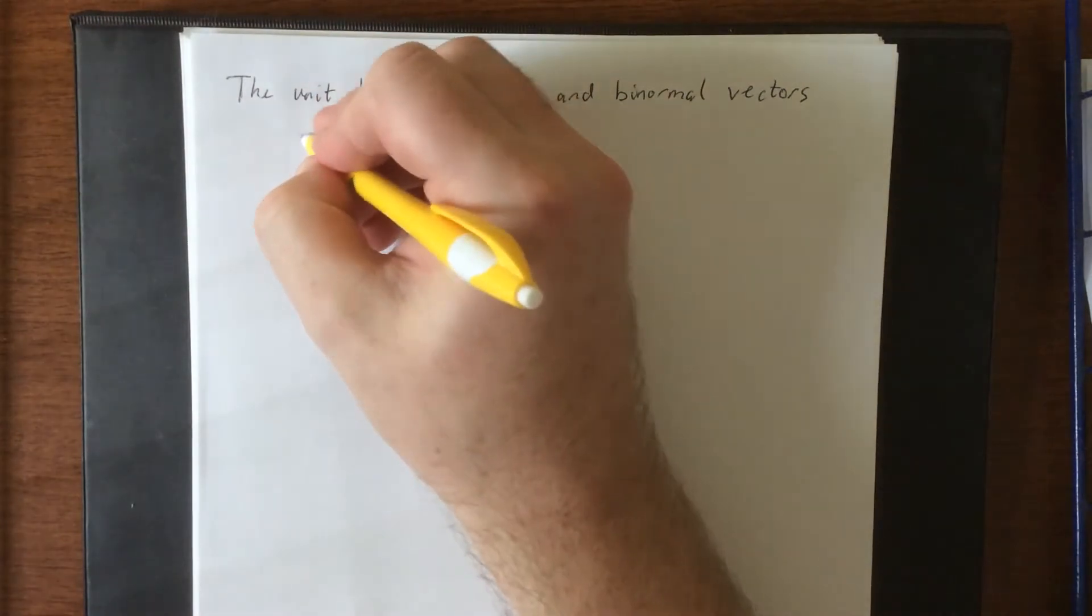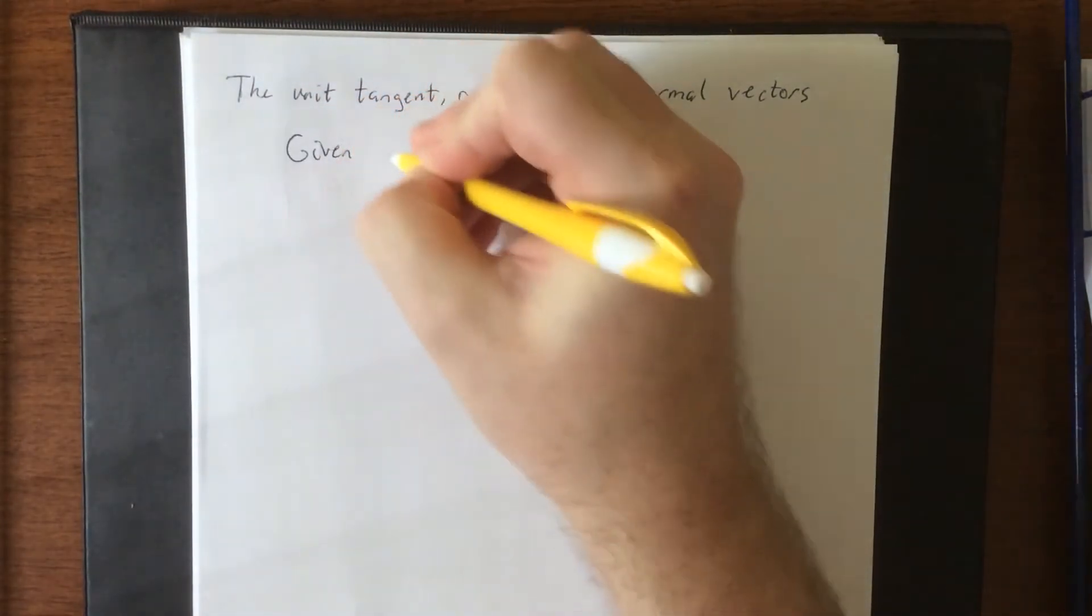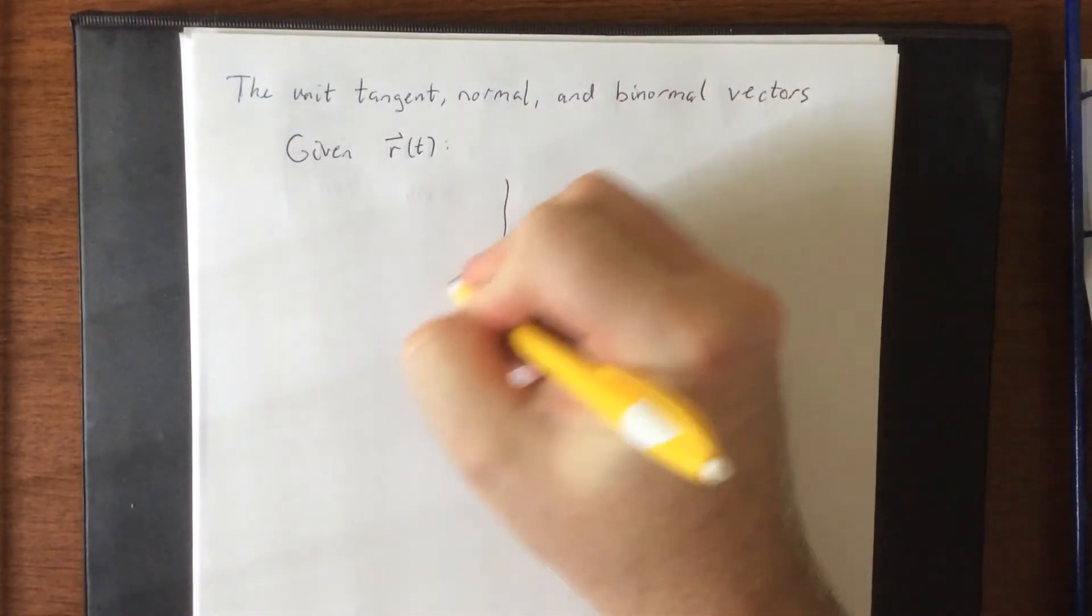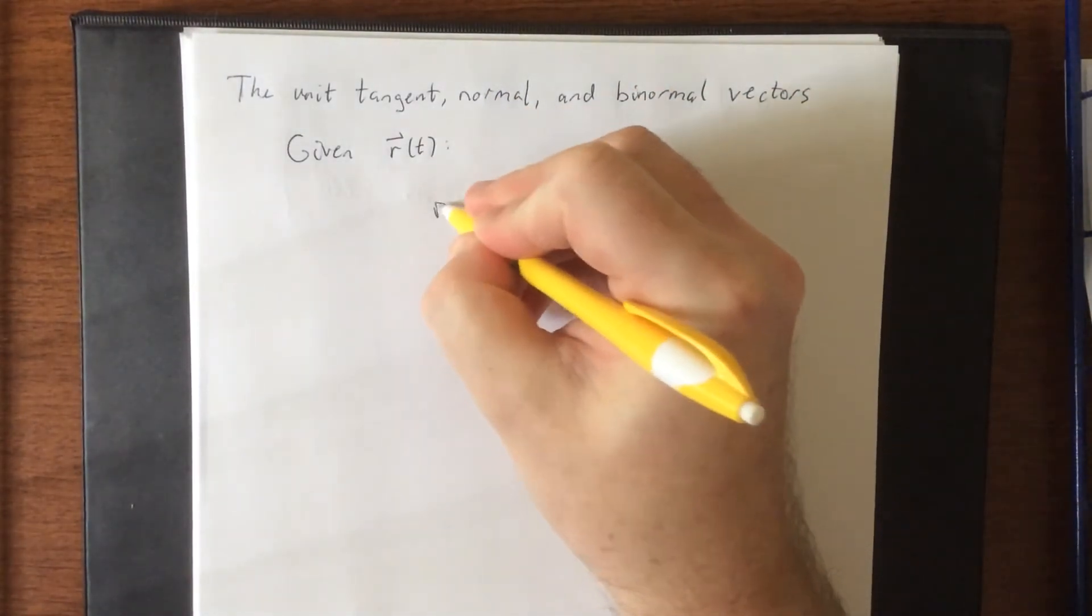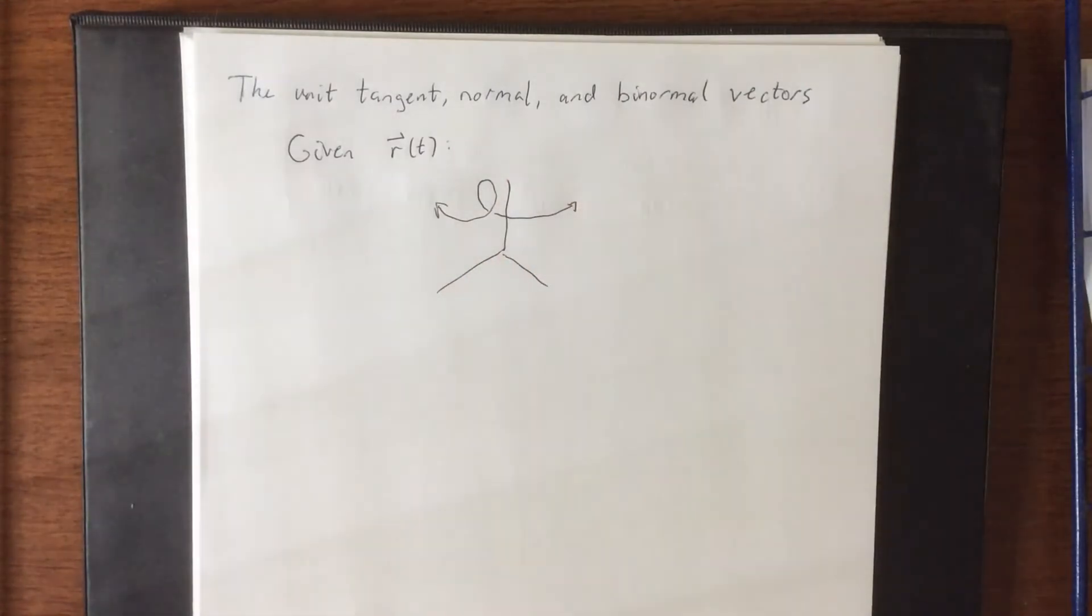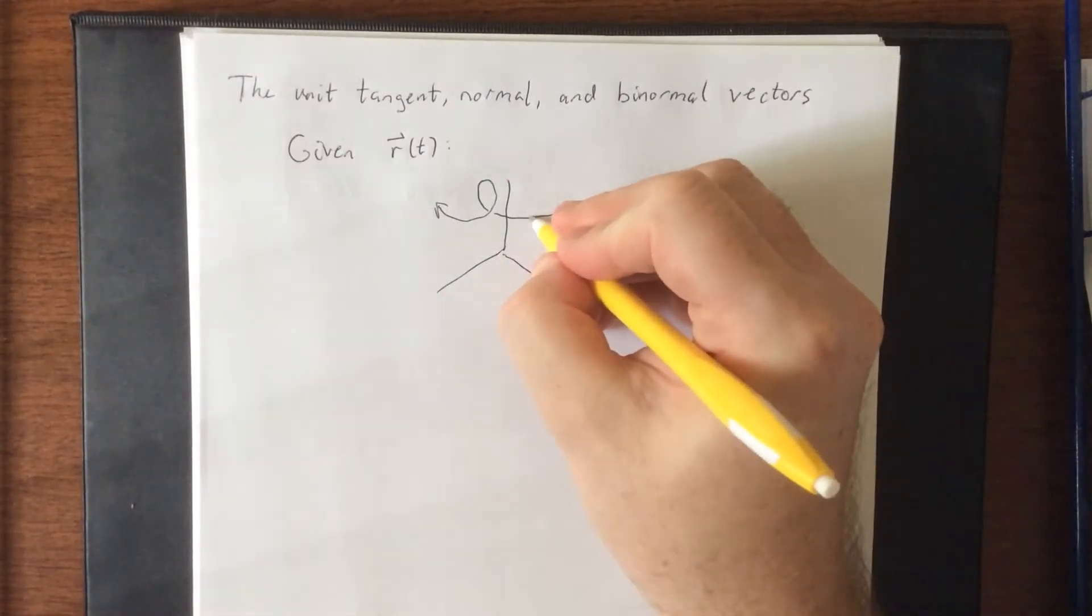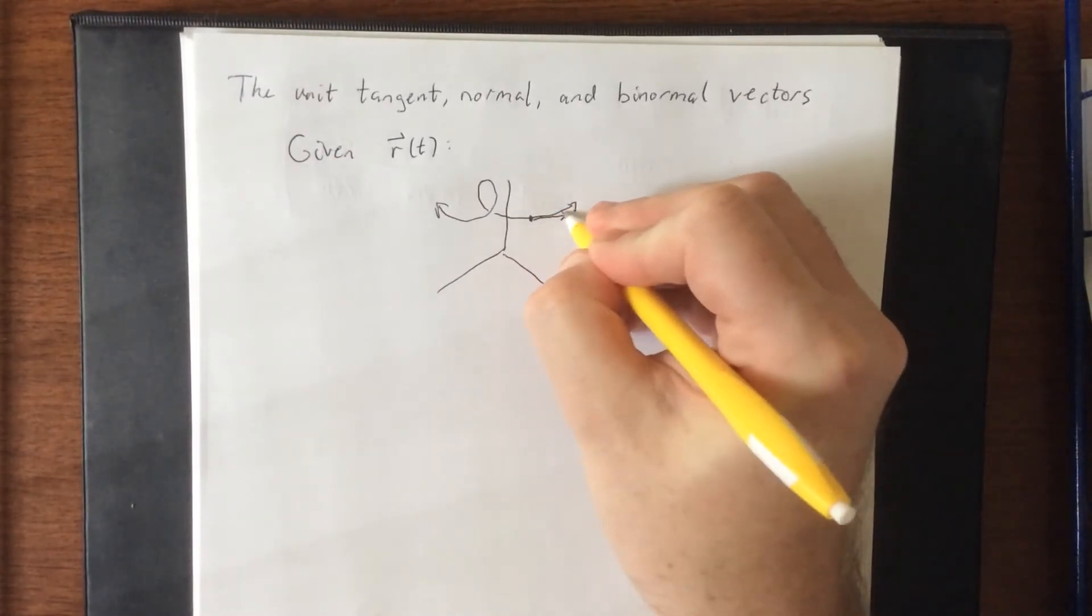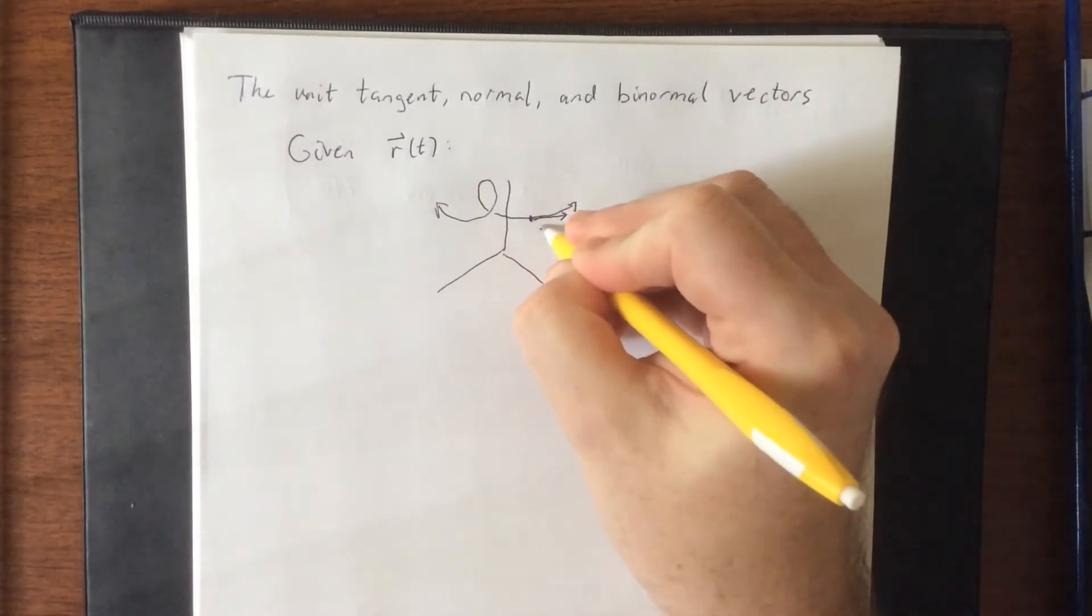Given a space curve, so in three dimensions we have some sort of curve going on. We've already seen what the unit tangent vector is, so given a point, the unit tangent vector is going to point in the same direction as the tangent line.